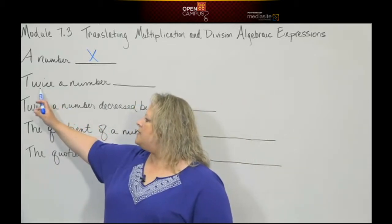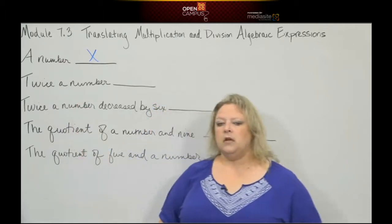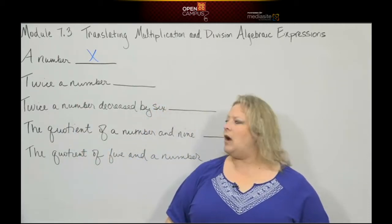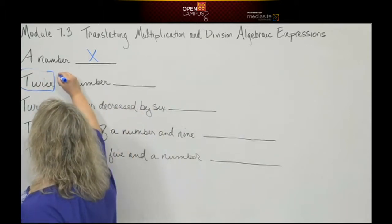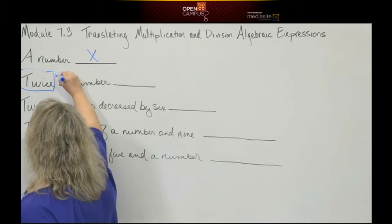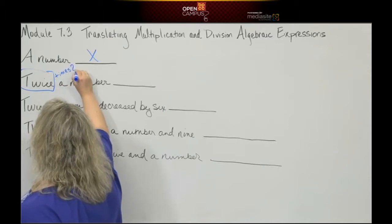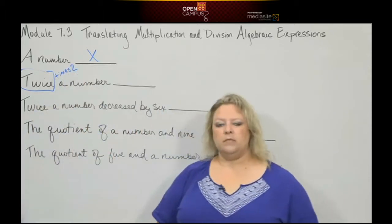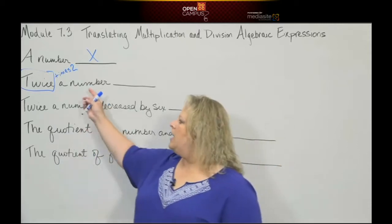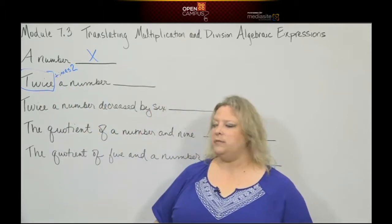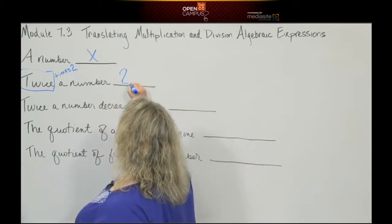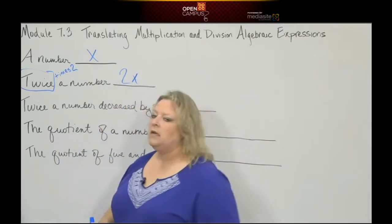When I say twice a number, remember our math order of operations words: twice means times 2. That means I'm going to take a number, whatever that number is going to be, and multiply it by 2. So I'm going to write 2x because that means 2 times whatever value x may be.